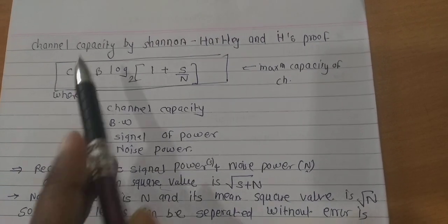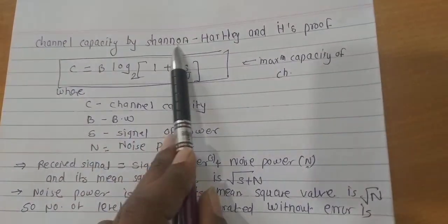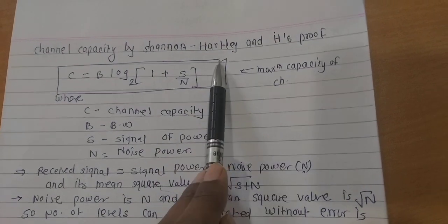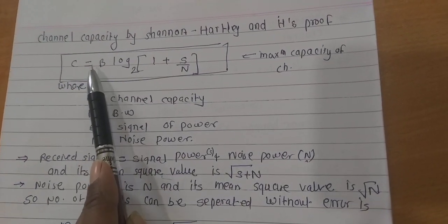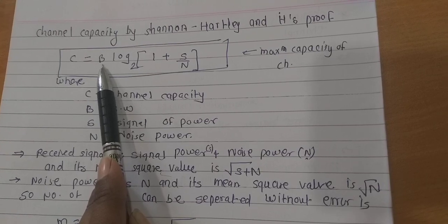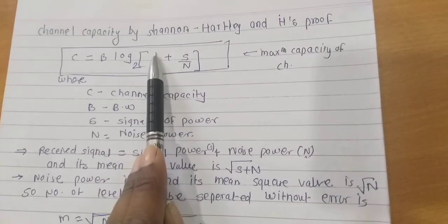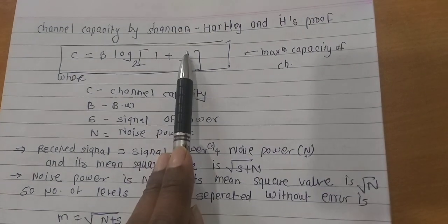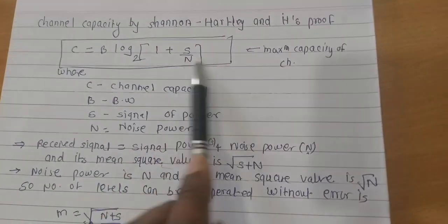Hello students, today we are going to study the channel capacity by Shannon-Hartley and its proof. The channel capacity is given by C = B log₂(1 + S/N), where B is the bandwidth and S/N is the signal-to-noise ratio.